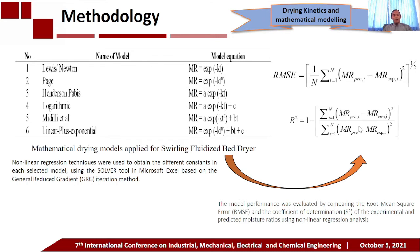These are the mathematical models used in this research. Non-linear regression techniques were used to obtain the different constants in each selected model, using a software tool in Microsoft Excel based on the General Reduced Gradient iteration method. The model performance was evaluated by comparing the root mean square error (RMSE) and the coefficient of determination (R²) of the experimental and predicted moisture ratios using non-linear regression analysis.